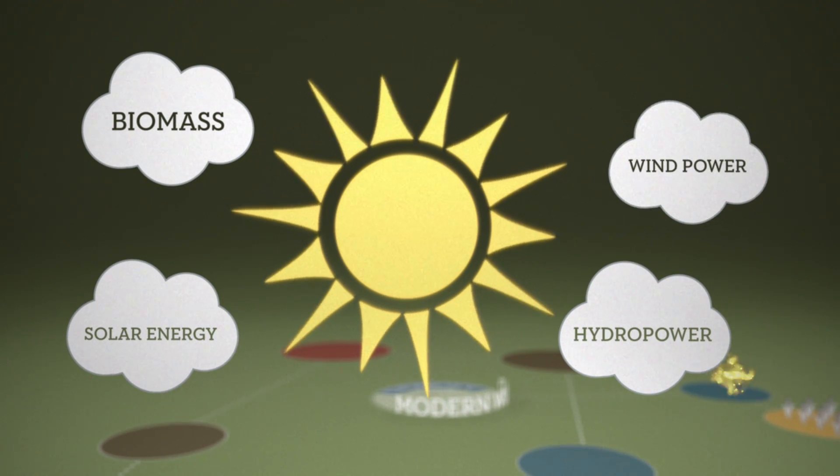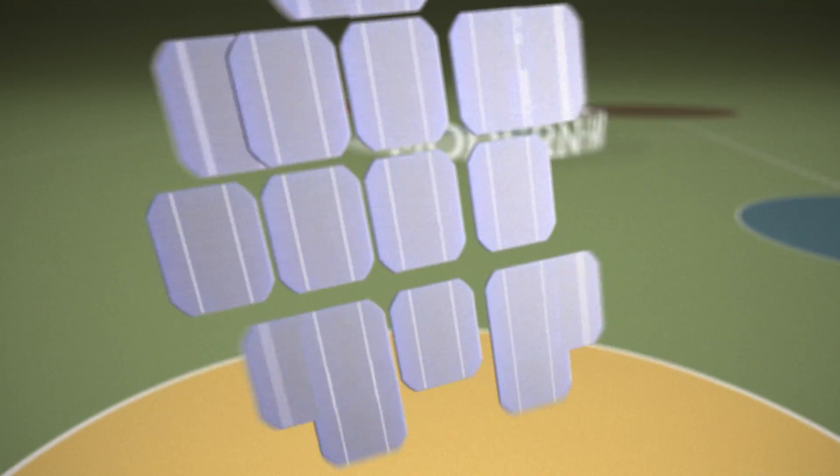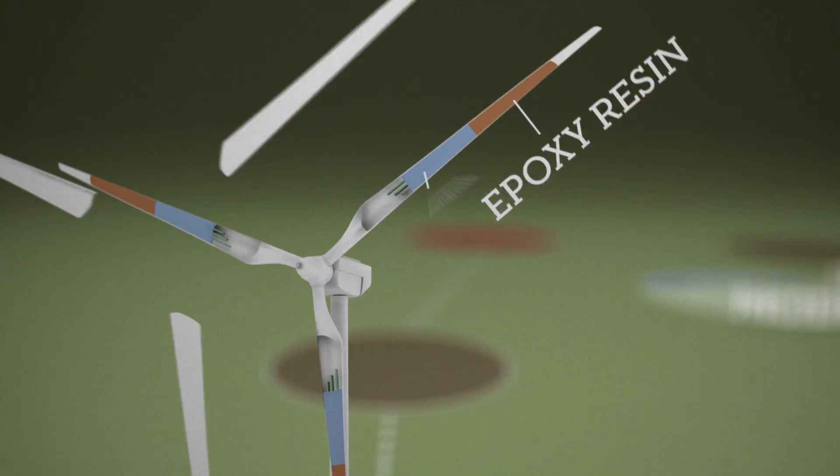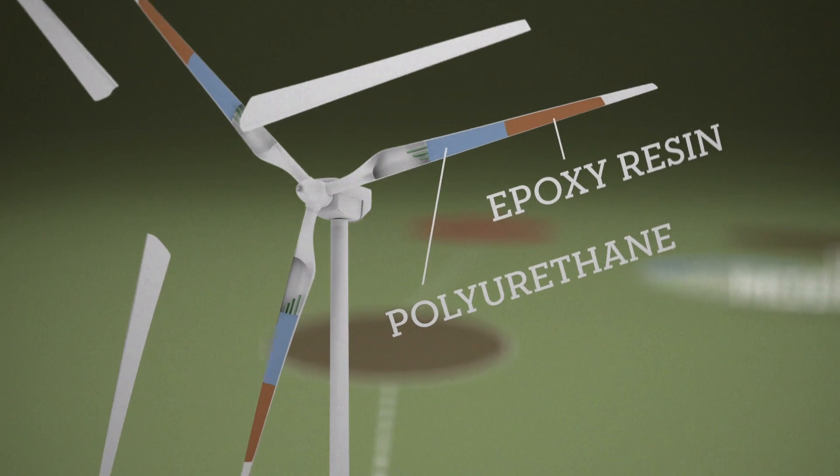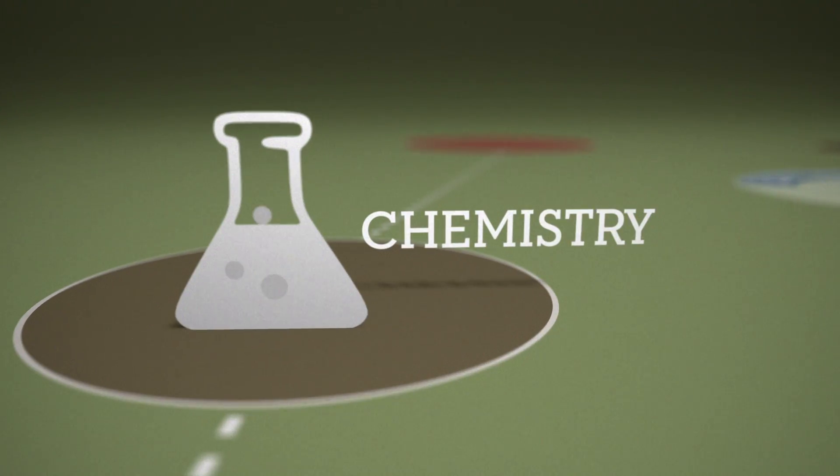And these energy solutions are being developed with the help of chemistry too. Purified silicon is used in solar power technology. Lightweight plastics are used to make wind turbines more economical and sustainable. These innovations are possible through chemistry.